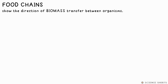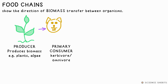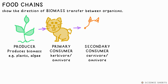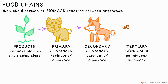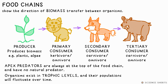A food chain shows the direction that biomass and therefore energy flows in an ecosystem from one trophic level to another. Producers are any organisms that use sunlight to produce biomass, that's usually plants or algae. Primary consumers eat the producers — that's herbivores that only eat plants or omnivores that eat both meat and plants. Then predators known as secondary consumers, that could be carnivores or omnivores, prey on these, and then we can have tertiary consumers as well. Apex predators are at the top of the food chain with no natural predator above them. Population numbers of all of these will fluctuate in an ecosystem over time. By the way, this food chain is possible — bears have been known to eat foxes.